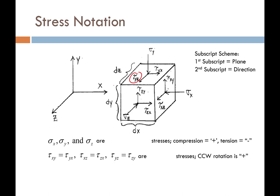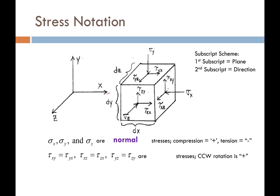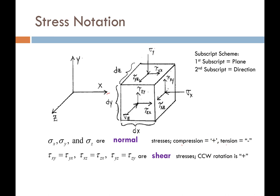The same is true of tau yz and so on. The dimensions of our cube are defined as dz, dy, and dx, denoting that it can be any size element we're interested in. These sigma stresses are normal stresses; the taus are shear stresses. Because we're dealing with geomaterials, compression is positive and tension is negative. That may be different than other materials or mechanics courses where a material can be in tension just as much as compression. But in geomaterials, it's almost always in compression, so we make positive compression.